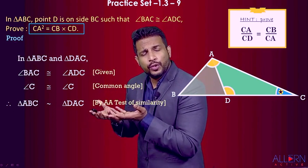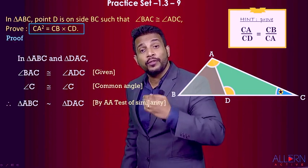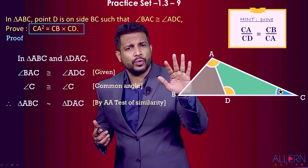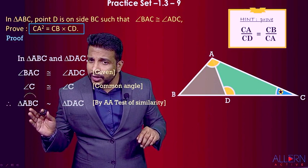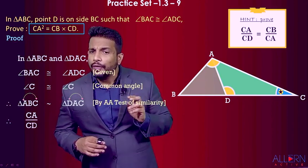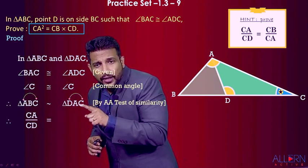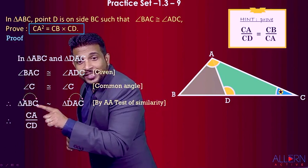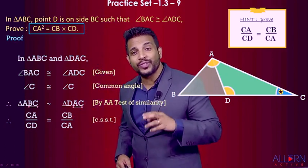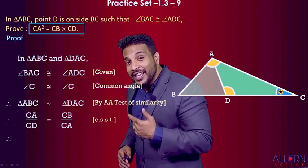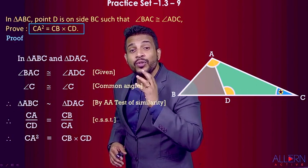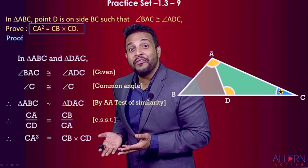Once we have similar triangles, the ratios of corresponding sides are equal. We want CA twice, so: CA/CD = BC/CA, since CA corresponds to CD and BC corresponds to CA in the similar triangles. Cross-multiplying gives CA × CA = CB × CD, that is, CA² = CB × CD. And the proof is complete — beautiful!